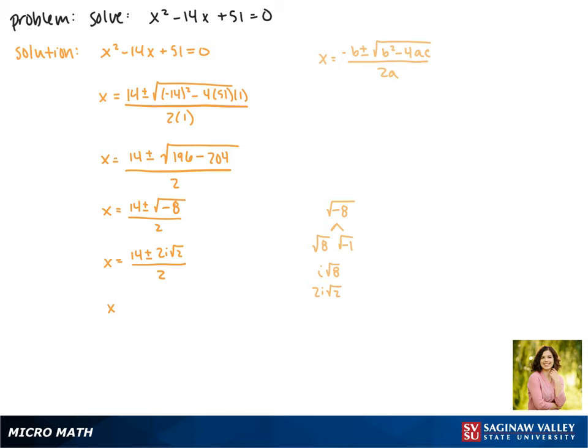Breaking this up into separate fractions, we get x equals 14 over 2 plus or minus 2i times the square root of 2 over 2. This simplifies to give us our complex solutions of 7 plus or minus i times the square root of 2.